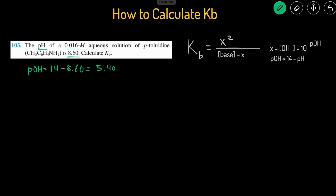Now that we have the pOH, we need to solve for the concentration of OH, and the way we do that is by raising 10 to the negative pOH. So the concentration of OH is going to equal 10 raised to the negative pOH, which is negative 5.4.